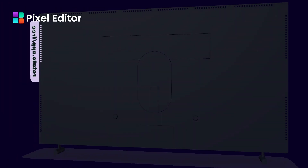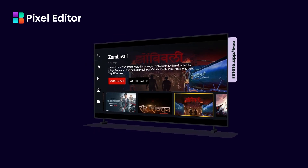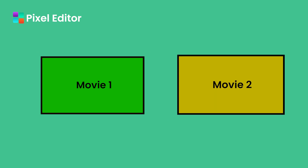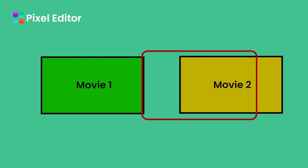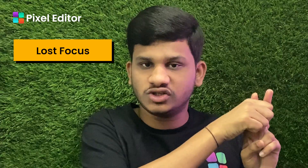Hello, I'm Devendra. Today in this video I'm going to show you how you can add the navigator inside your Android TV application. Let's suppose this is movie one and this is movie two. If we navigate from movie one to movie two, then movie one loses focus and movie two gets focus.